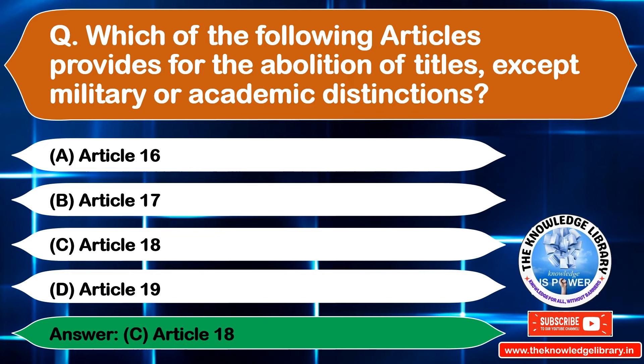The next question is: the fundamental right to constitutional remedies is provided in which article? Option A: Article 32, Option B: Article 33, Option C: Article 34, Option D: Article 35. The correct answer is Option A: Article 32.